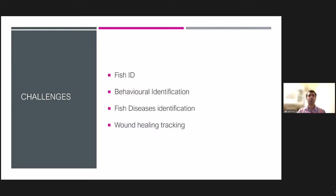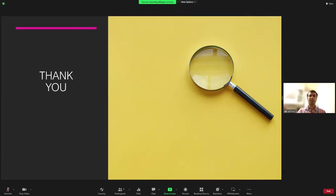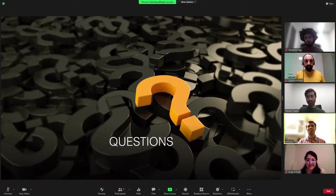In closing, the data cannot be made publicly available because it is company and farmer data. During Q&A, a question about data collection was asked. Aditya explained that IMR has installed 2D stereo cameras in different locations, cameras have also been installed by Bergen Matra in collaboration with farmers, and all images are collected and sent to the cloud. He receives the data after the company performs annotations — so he does not need to collect the data himself.